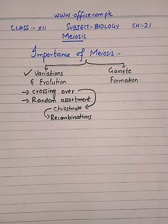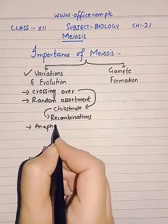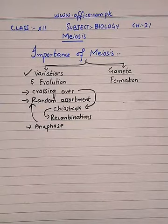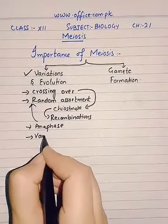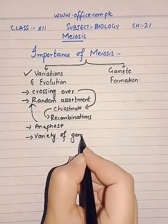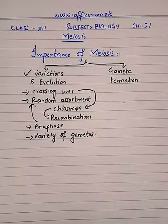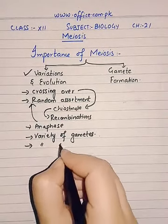Also, during anaphase, the chromosomes will be separated randomly. There will be random assortment of homologous chromosomes, which will give a very wide range and variety of gametes. Both these phenomena — crossing over and random assortment — will cause variation, and modification of the genome will occur, resulting in a variety of genetic makeup.